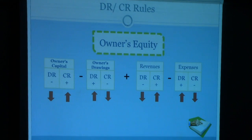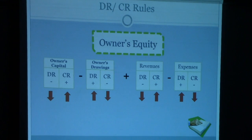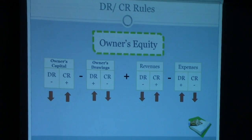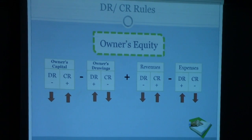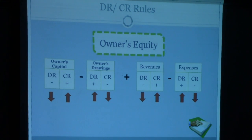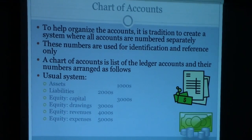To summarize the debit and credit rules: for owner's capital, credit increases it and debit decreases it. For owner's drawings, debit increases and credit decreases. For revenues, credits increase and debits decrease. For expenses, debits increase and credits decrease.